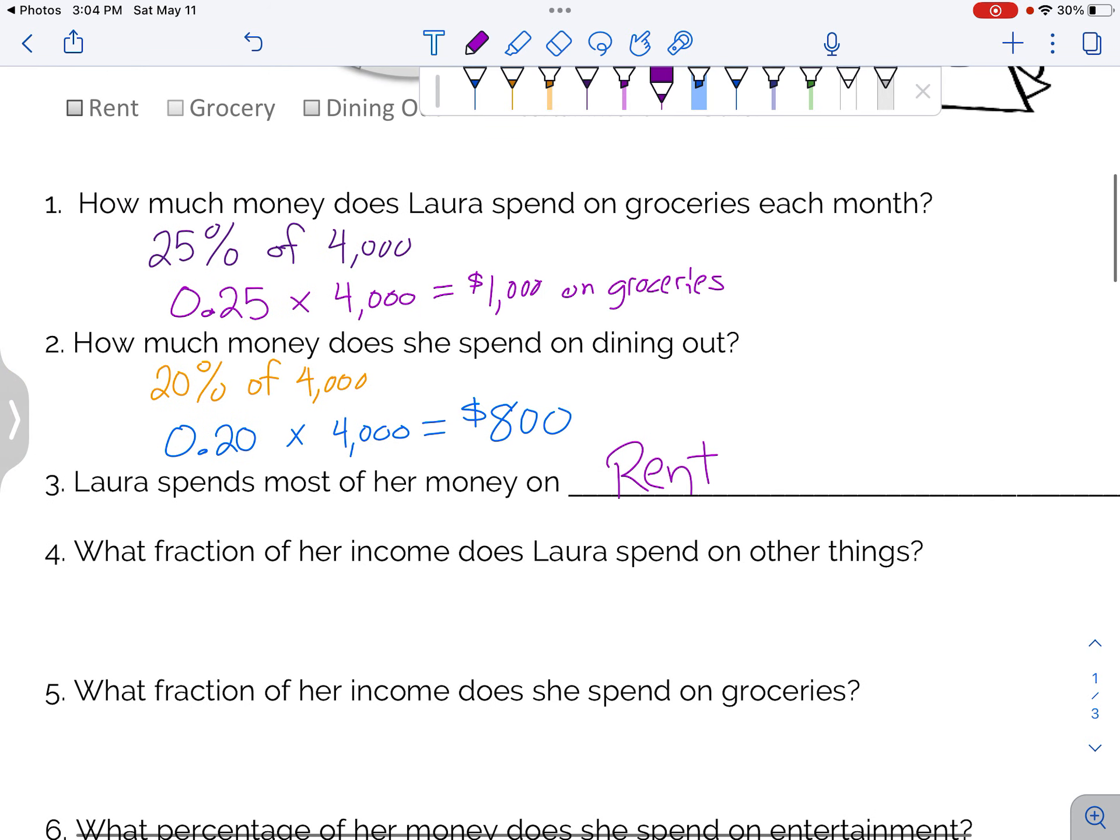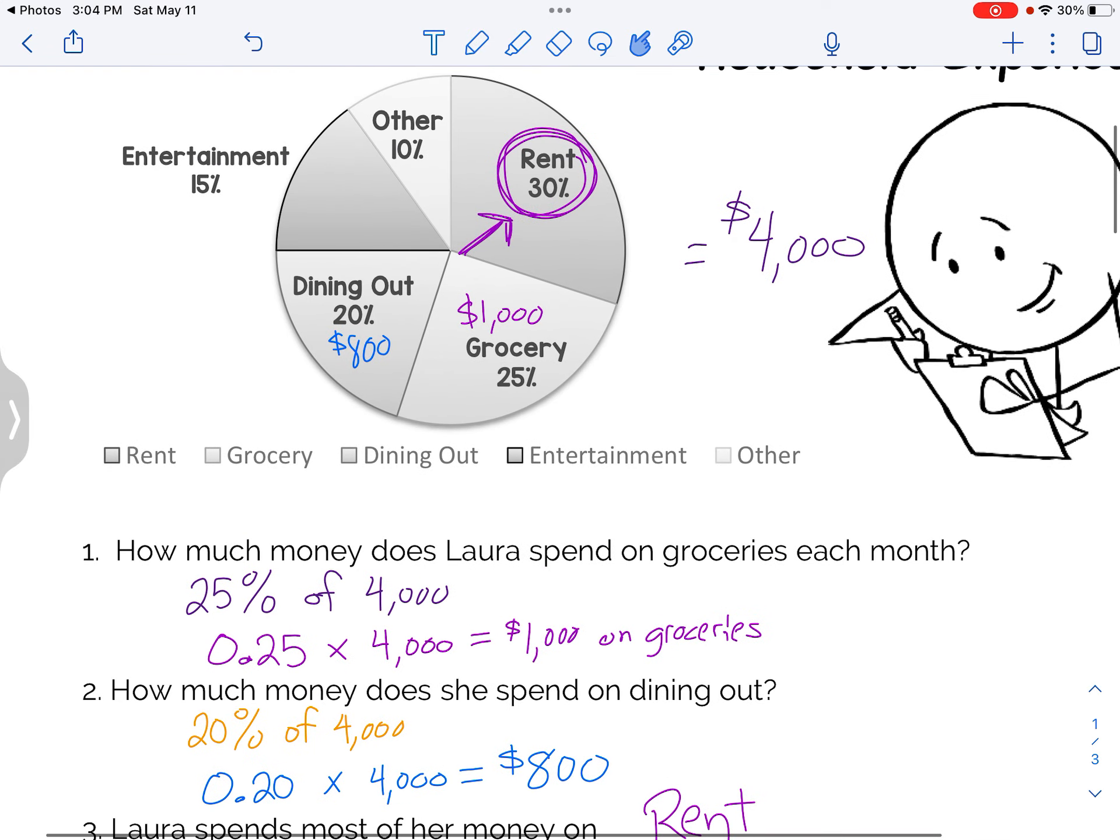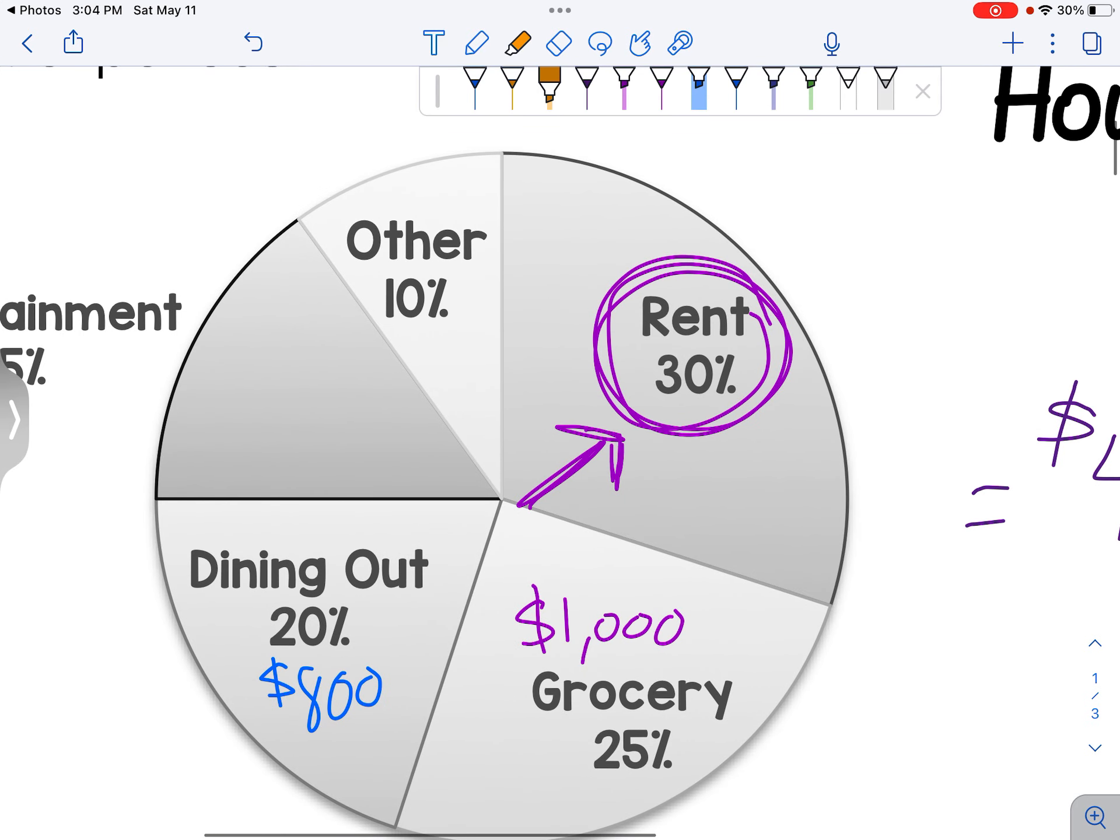Then it says, what fraction of her income does Laura spend on other things? Let's see. Is that a category? Yep. There it is. Other things. So that's right here. Other. So that's 10%.